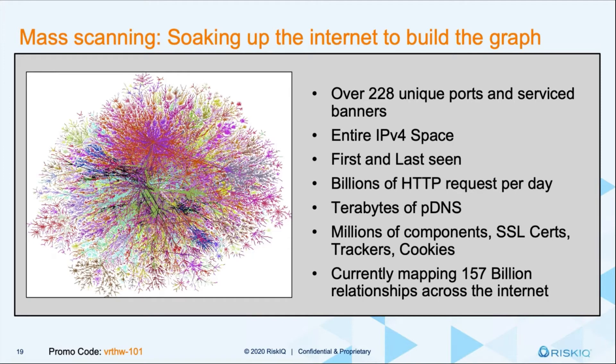We're currently mapping 157 billion relationships across the Internet. Over the course of the last 11 years of ingesting all this data, we've collected over five petabytes of Internet-facing data. One thing to think about with first and last seen: when something got infected and when it got cleaned up, we can tell. If somebody put a malicious script somewhere or your website is accessing a bad script, we can tell you the first time it was seen and when it stopped being seen — so we can tell you when they were compromised and when they were cleaned up.